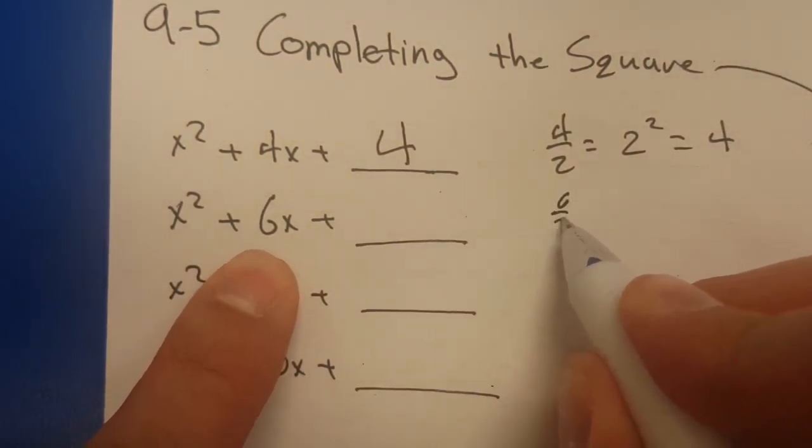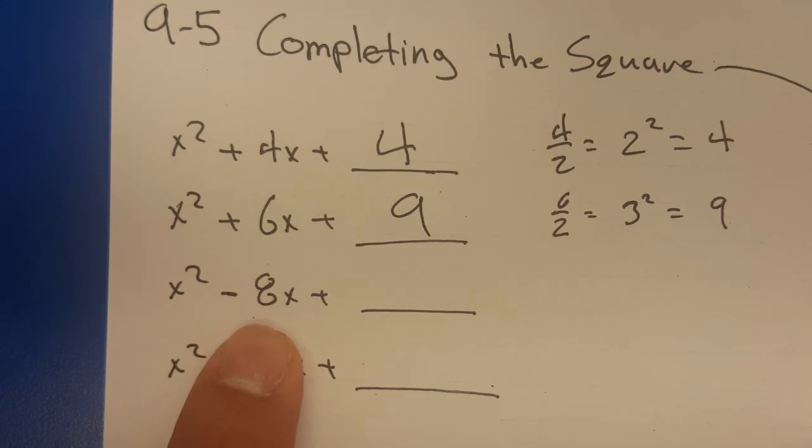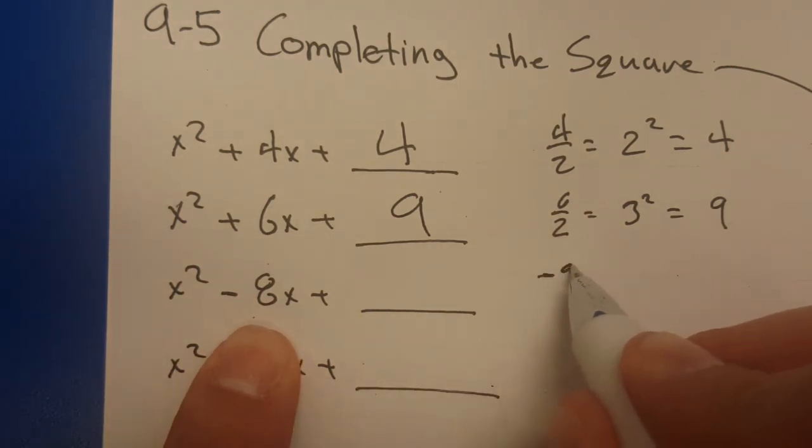Next one, 6 divided by 2 equals 3, square it, 9. Negative 8, ooh, careful now. Negative 8 divided by 2 is a negative 4.